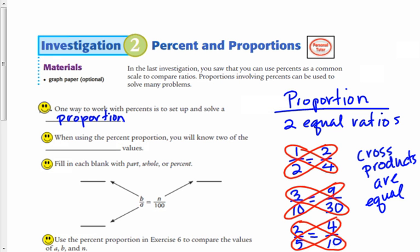And when we are solving a percent proportion, you will always know two of the missing values in the percent proportion. We have three missing values. We are going to always know two of those. And if we know two of them, then we can find the other one using the idea of cross products. And I will show you that in a second.